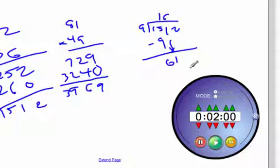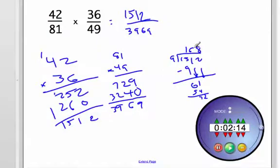9 goes into 61 six times. 9 times 6 is 54. That's 7. I'm going to run into my clock here. Bring down the 2. That's 72, and that will go in eight times. So 168 is my new numerator.